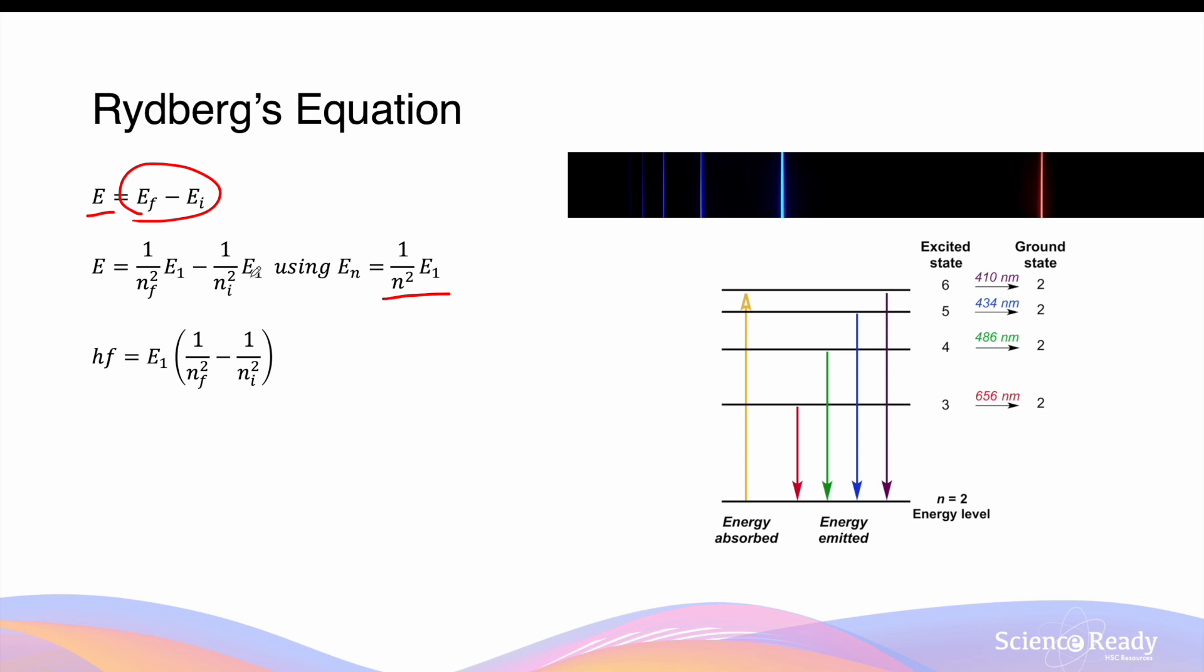By factorizing out E1 and substituting E, which is the energy of the radiation by HF, we can get the following equation. And by replacing frequency with the speed of electromagnetic wave divided by the wavelength, we can get hc over λ. Finally, by dividing Planck's constant and c on both sides, we can get Rydberg's equation where r equals 1.097 times 10 to the power 7.